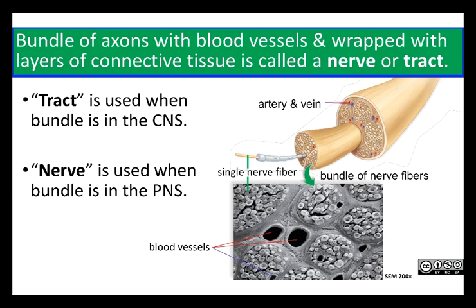There are different names for structures depending on whether they exist in the peripheral nervous system versus the central nervous system. If you have a group of axons running together, associated with blood vessels and wrapped with connective tissue, in the central nervous system that structure is called a tract. In the peripheral nervous system it's referred to as a nerve, but in both cases you have bundles of axons. They're bundled because they come from the same place and potentially go to similar locations, getting into smaller and smaller bundles as they near their destination.